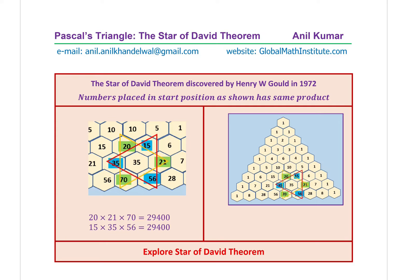It is called the Star of David theorem. The Star of David theorem was discovered by Mr. Henry W. Cloud in 1972 — after almost 300 years of Pascal's Triangle being in existence. We'll look into this pattern and explore a rule for the same.